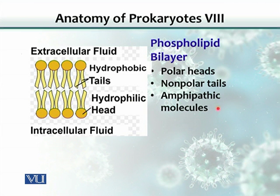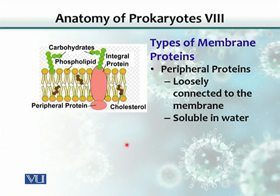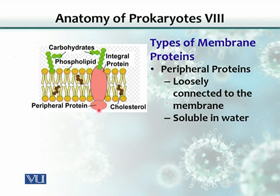There are two kinds of proteins inserted into the cell membrane. As you can see here, this protein is called a peripheral protein — it sits at the periphery of the cell membrane. And this is an integral protein — it is present within the cell membrane. Peripheral proteins are loosely connected to the membrane and are soluble in water, meaning they can interact with water.